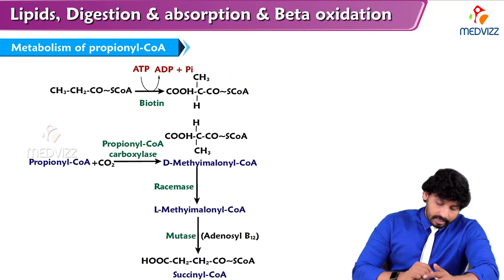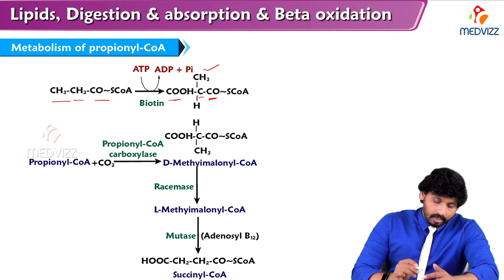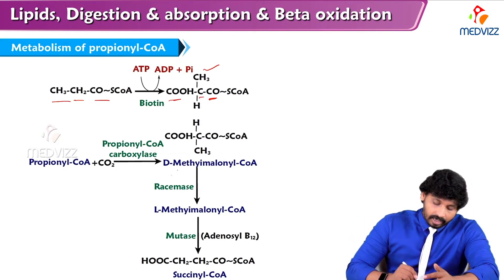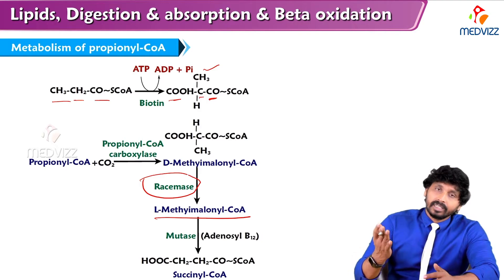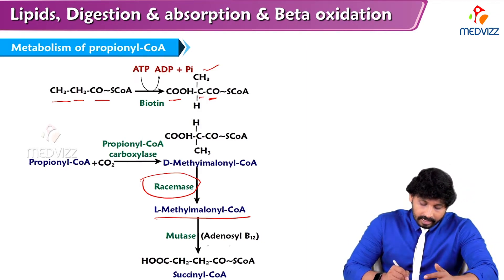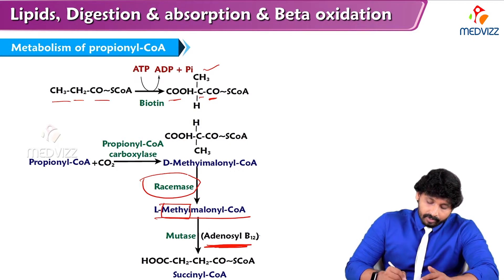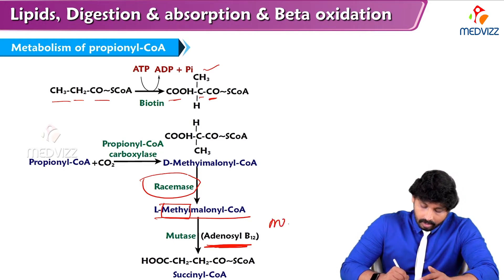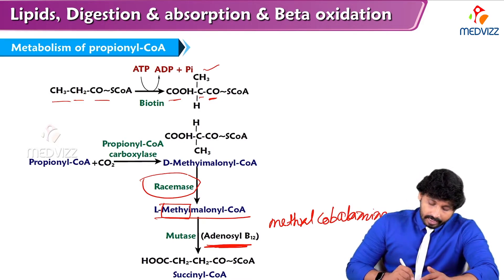Here is an overview of propionyl-CoA metabolism. Propionyl-CoA is a 3-carbon compound; one more carbon is added to make a 4-carbon compound. Propionyl-CoA is converted to methylmalonyl-CoA in D-form. D-methylmalonyl-CoA is converted to L-methylmalonyl-CoA by racemase, which converts the D isomer to L form. Then mutase — which mainly requires the adenosyl form of B12 — rearranges L-methylmalonyl-CoA, with B12 accepting the methyl group to form methylcobalamin. Finally, it is converted to succinyl-CoA, which enters the TCA cycle.